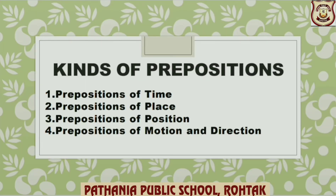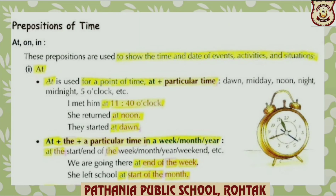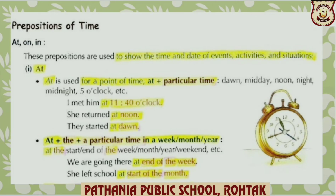We are going to learn the following kinds of prepositions: prepositions of time, prepositions of place, prepositions of position, and prepositions of motion and direction. Prepositions that are used to denote time are at, on, in. These prepositions are used to show the time and date of events, activities and situations. First, let us discuss where to use 'at'. At is used for a point of time, that is, at plus a particular time.